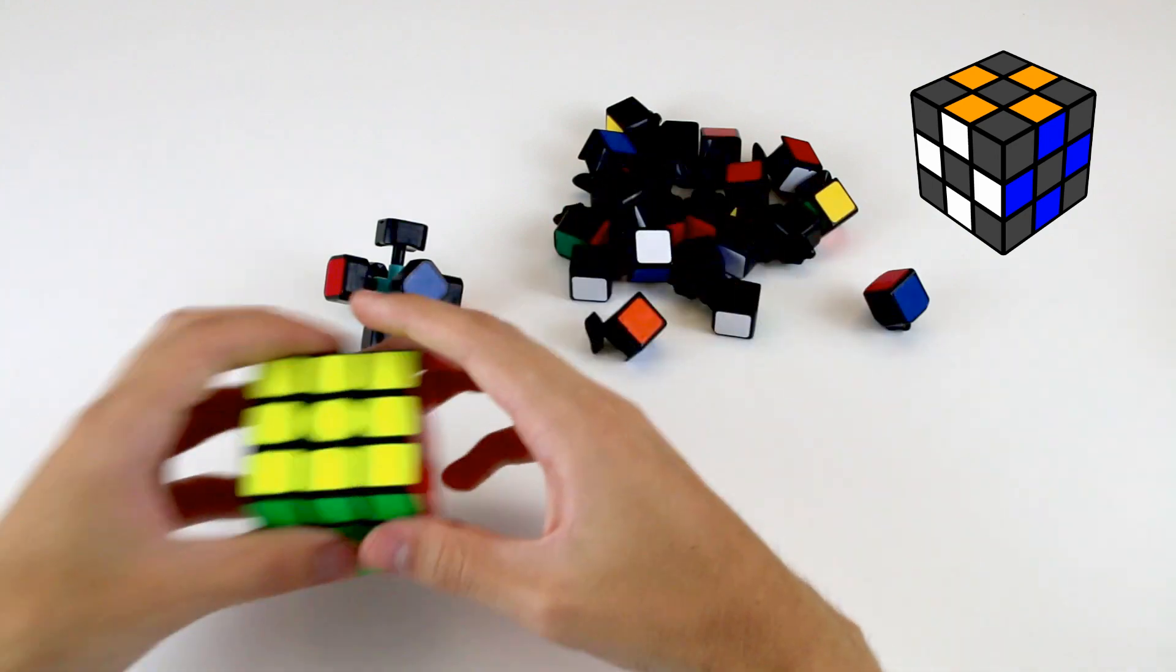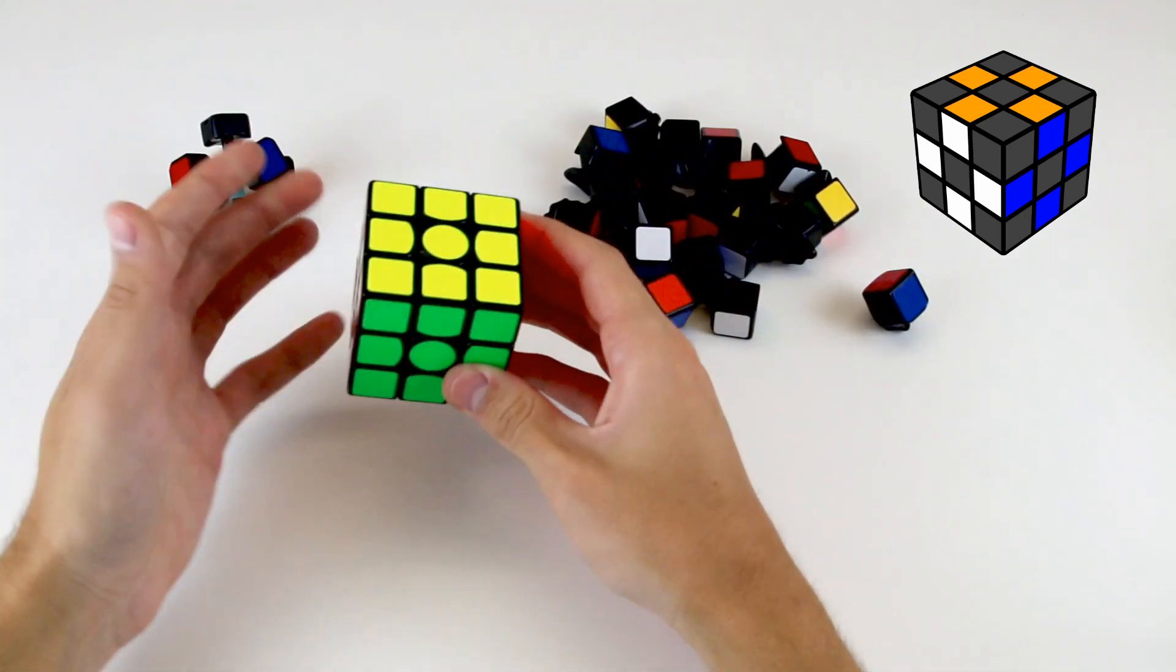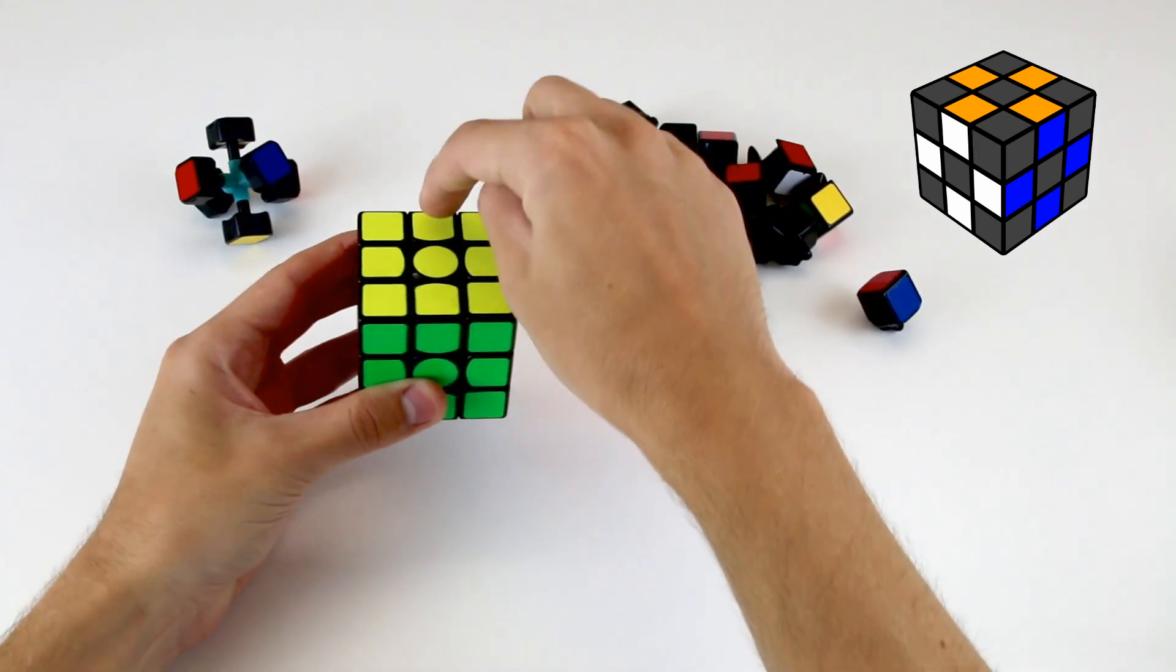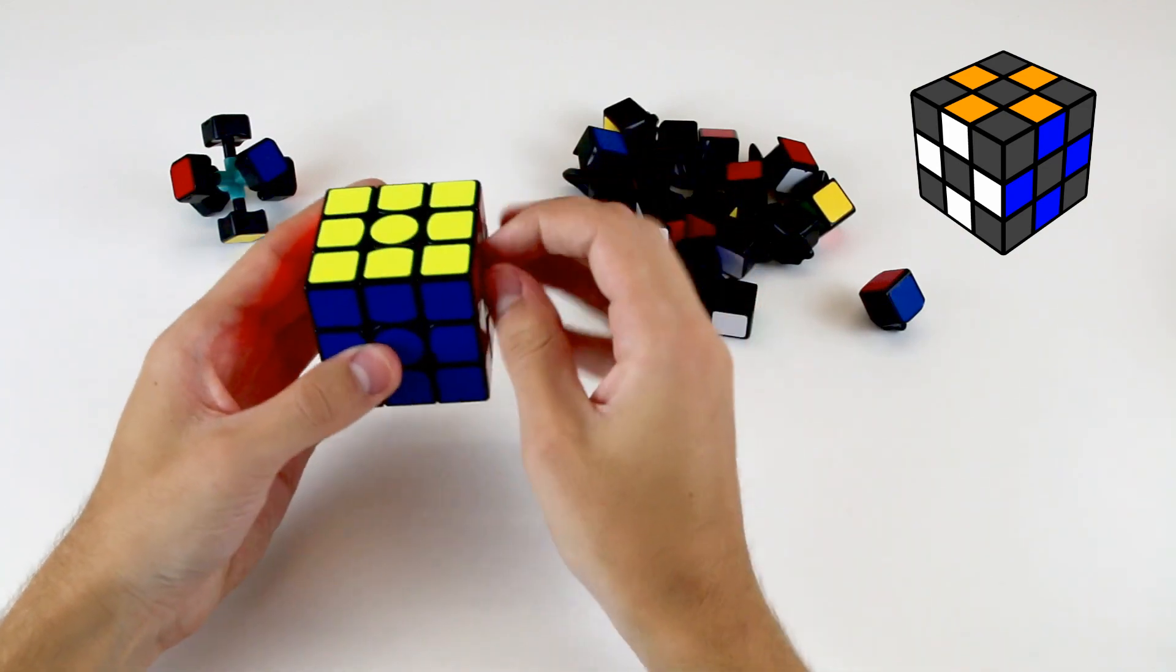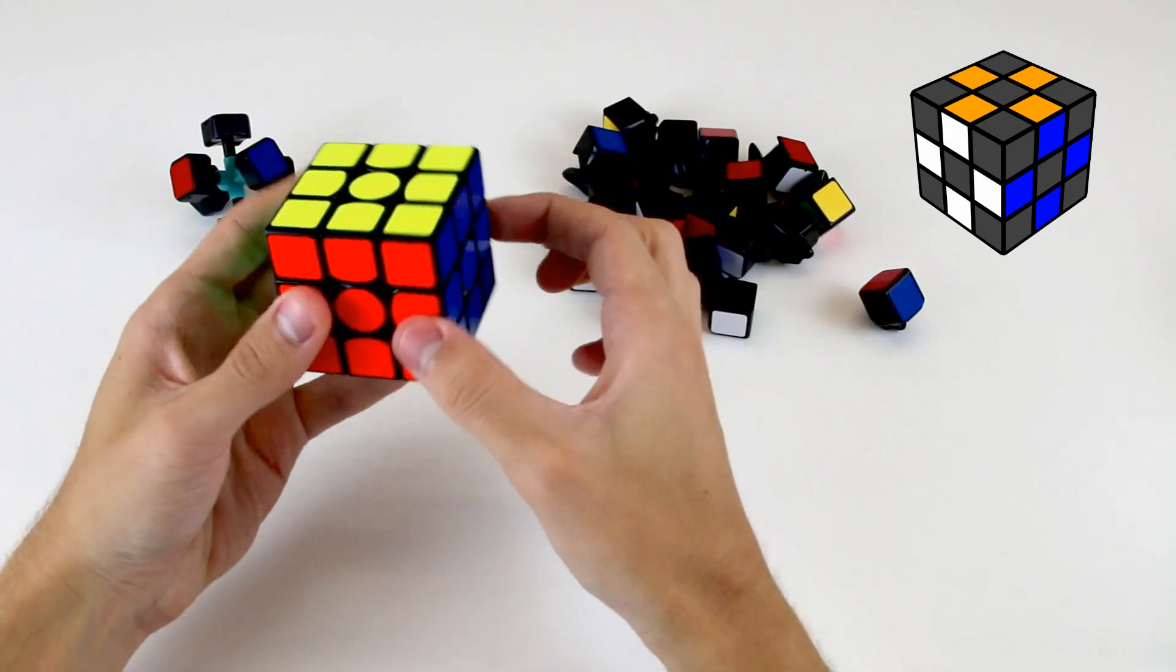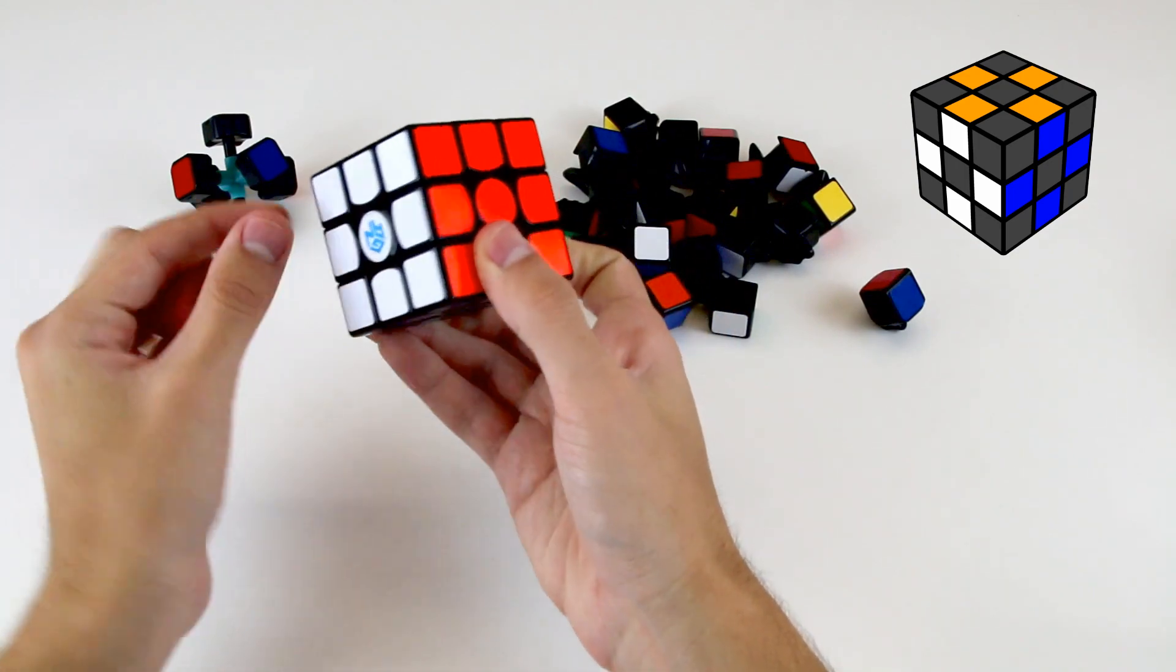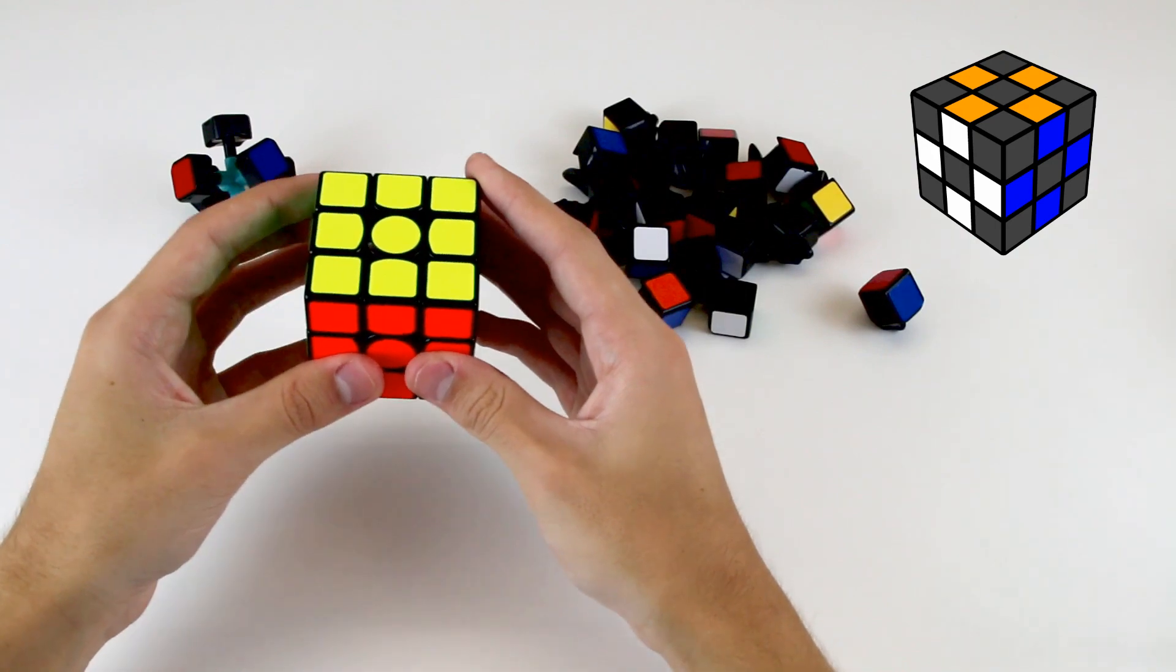So to test your knowledge so far, let's see if we can locate every edge piece on a solved Rubik's Cube. At the top layer, there is one here, one here, one here, and one here. So there are four edge pieces in the top. In the middle, there is this piece, this piece, this piece, and this piece, so four in the middle. And on the bottom, there is one here, one here, one here, and one there. So there are twelve edge pieces on a Rubik's Cube.